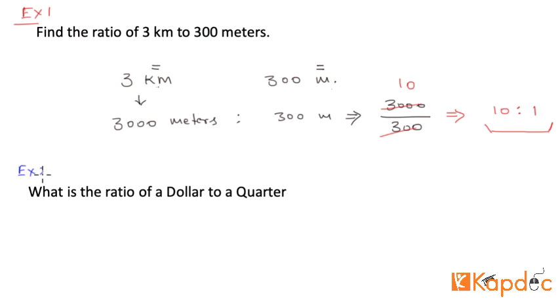My example number two is: what is the ratio of a dollar to a quarter? One dollar to a quarter. A quarter we know is 25 cents. Now we want to compare these two quantities but we want to bring dollars into the same unit of measure as cents.